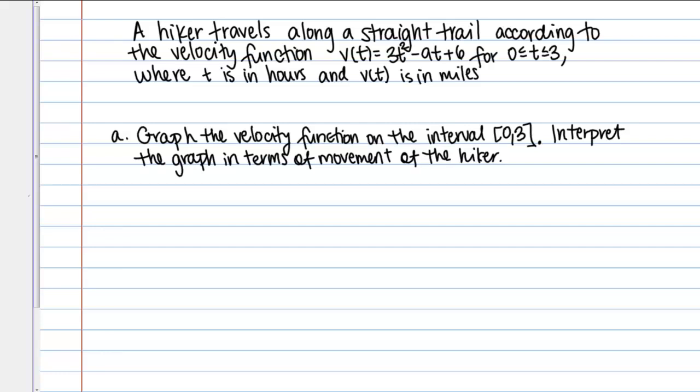Let's work through an example that requires us to calculate displacement and distance traveled given a velocity function. A hiker travels along a straight trail according to the velocity function V(t) = 3t² − 9t + 6, for t between 0 and 3, where t is in hours and V(t) is in miles per hour. Part A asks us to graph the velocity function. Part B, we'll calculate the displacement over the interval from 0 to 3, and then we'll calculate the distance traveled over the same interval.